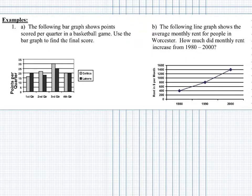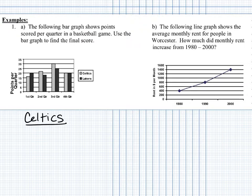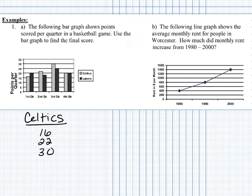The following bar graph shows points scored per quarter in a basketball game. We're going to use the bar graph to find the total score, the final score. Let's begin by making a chart so we can identify the points scored per game. It looks like in the first quarter the Celtics scored 16 points, the second quarter 22 points, the third quarter 30 points, and the fourth quarter 20 points. You can add those together to get the Celtics final score.